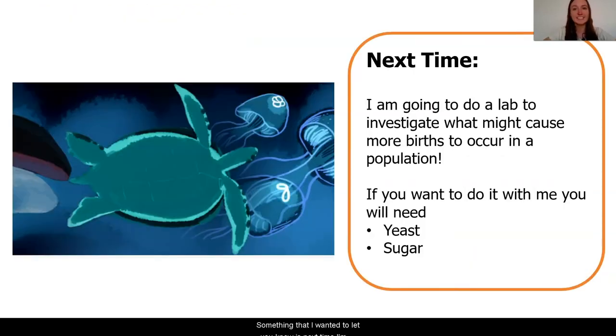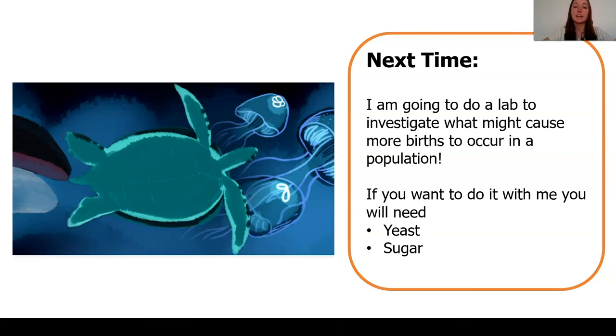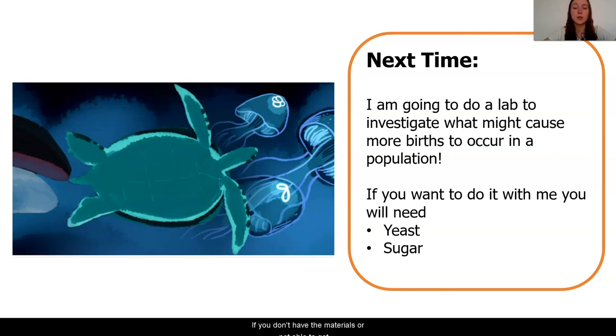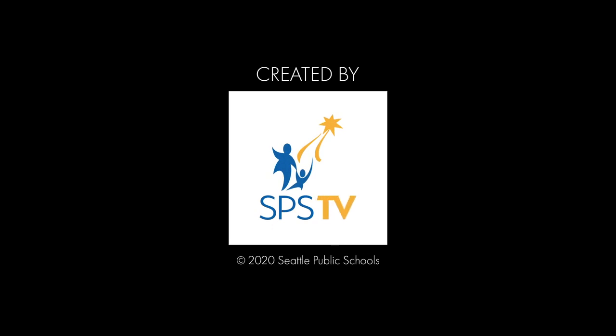Something I wanted to let you know is that next time I'm going to be doing a lab investigation to explore why more births might be occurring in the moon jelly population. If you want to do it with me, the items you'll need are yeast and sugar — both might be around your house or easy to find at local grocery stores. If you don't have the materials, no worries — you can follow along with me. I'm really looking forward to our next lesson and to continue learning with you. Bye!